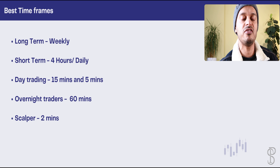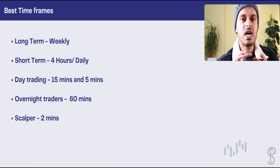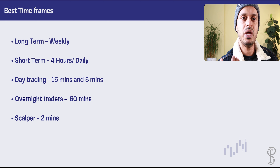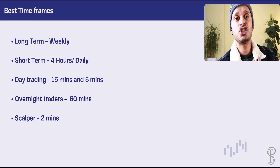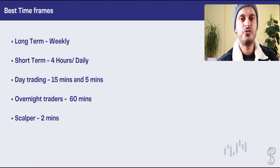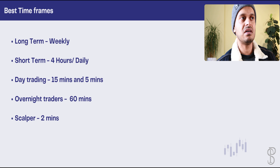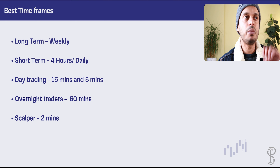The weekly is also my preferred time frame. I avoid looking at anything below the daily, and occasionally look at the four-hour to see what's happening intraday. For short-term traders — those holding stocks for a few days to a week — the industry-preferred time frame is the four-hour or daily. For day traders keeping positions within a single day, the preferred industry standard is the 15-minute or five-minute time frame.